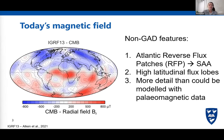When we look at the same field at the core-mantle boundary — the radial field — you can see a lot more detail, but you see the same non-GAD features again. In the South Atlantic and under Africa, you see these reverse flux patches that are basically the South Atlantic anomaly shown on the core-mantle boundary, and you can also see effects on the flux lobes at high latitudes.